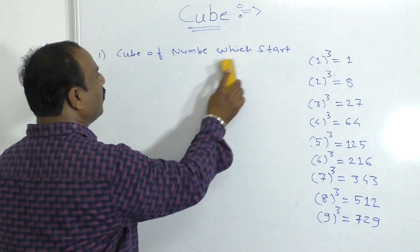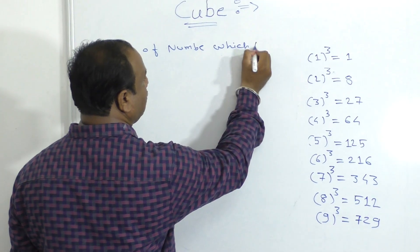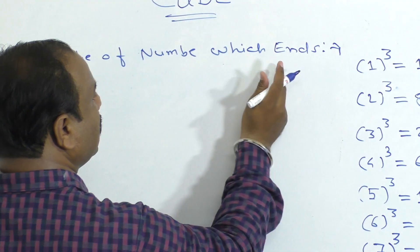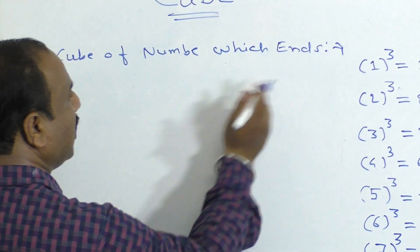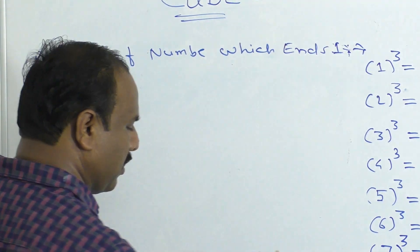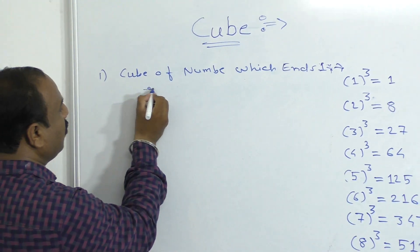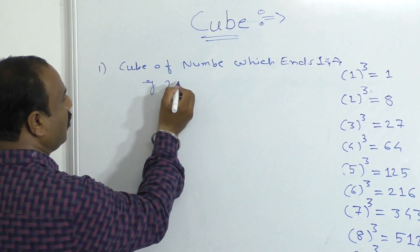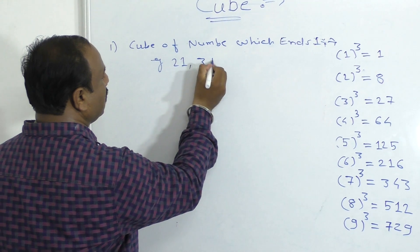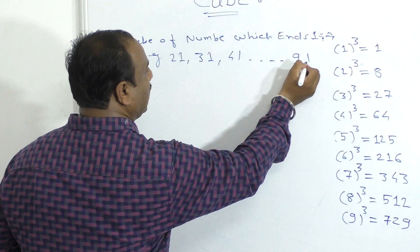This is the cube of a number which ends at 1 — starts at 1 and ends at 1. For example: 21, 31, 41, 91.